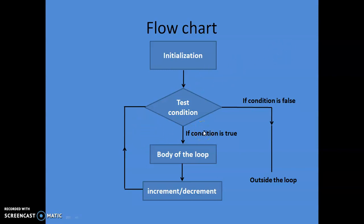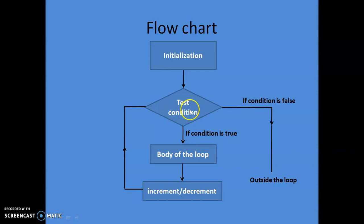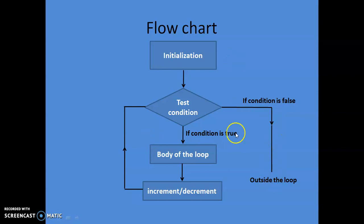Depending on whether the condition is true, it will execute the body of the loop. Once the body is executed, the loop variable — i or j — will be incremented or decremented. After that, it goes back to the test condition and checks again. If still true, the process continues — body executes, variable increments or decrements, condition is tested again — and this continues until the condition is false. Once the condition is false, it takes you outside the loop.